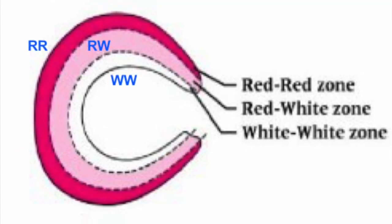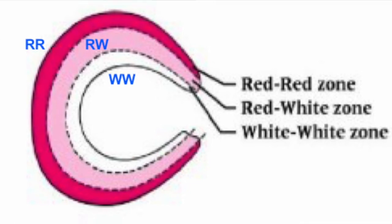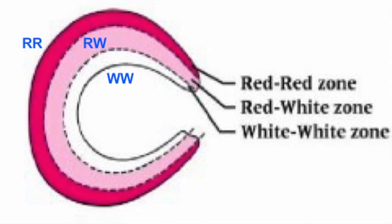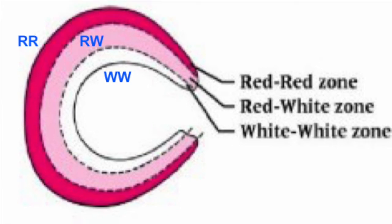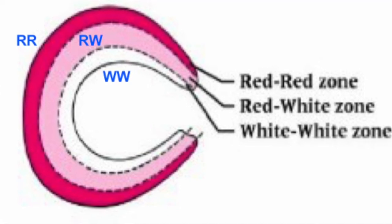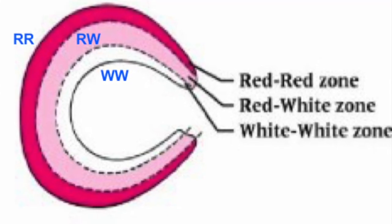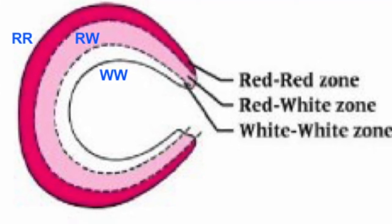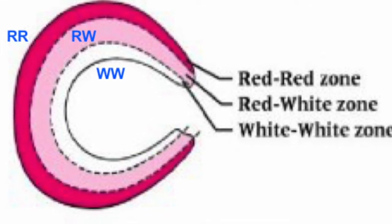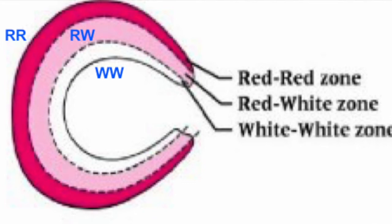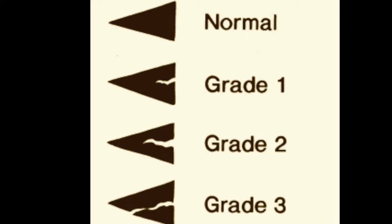Why do we need to know about these zones? Because if the tear is situated in the periphery extending a bit into the mid-zone, it is amenable to repair. But if it extends towards the apex into the white-white zone, it will never repair and the orthopedic surgeon likely has to go for a meniscectomy.